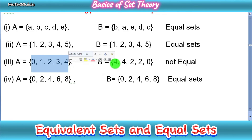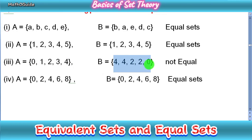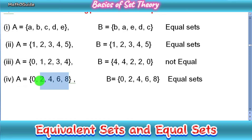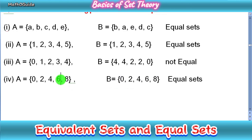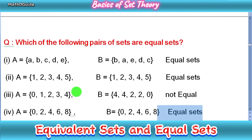In part three, set A is {0, 1, 2, 3, 4} with five elements, and set B is {4, 4, 2, 2, 0} — but this is not actually a set, it's a collection with repeated elements and is not a well-defined set, so these are not equal. In the last part, set A is {0, 2, 4, 6, 8} and set B is {0, 2, 4, 6, 8} — same number of elements and exactly the same elements — so A and B are equal sets.